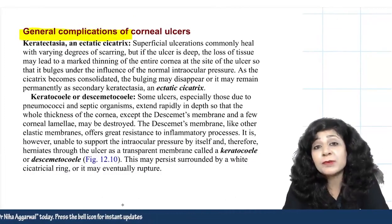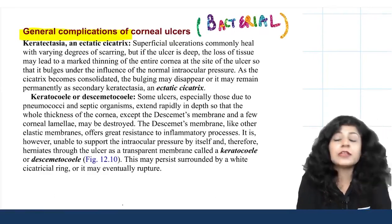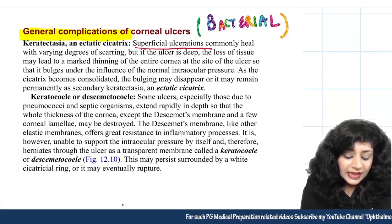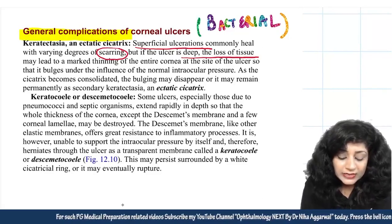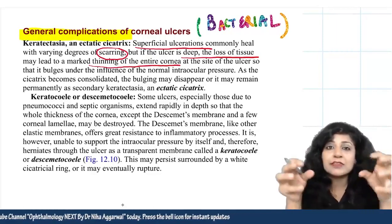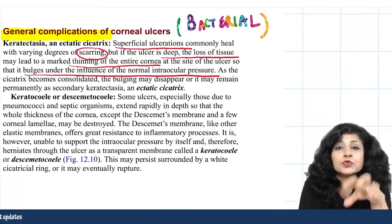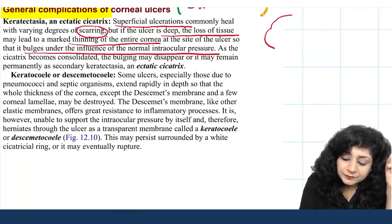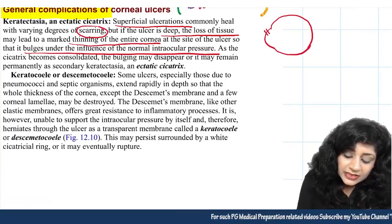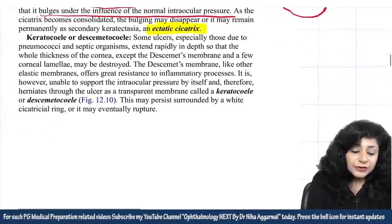General complications of corneal ulcer are more relevant to bacterial ulcers due to greater vascularization. Superficial ulceration heals with some scarring. Deep ulceration leads to thinning of the cornea; when the site of the ulcer thins, it bulges under normal intraocular pressure, leading to ectatic cicatrix, where the ulcer area protrudes outward.